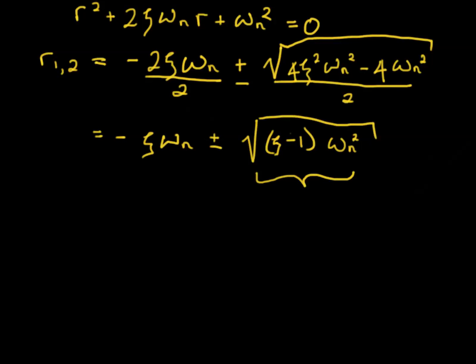I made a mistake here, excuse me. Zeta squared minus 1. We call this omega d or the damped frequency of vibration. As zeta goes to 0, the frequency of vibration goes to omega n. You can see that here. So we can rewrite this once again as minus zeta omega n plus or minus omega d.